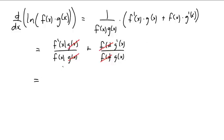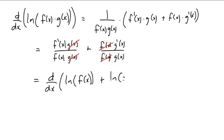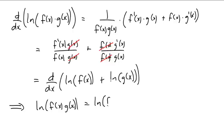This is the derivative of the natural log of f(x) — if you take the derivative of ln(f(x)), you get 1/f(x) times f'(x). And the remaining term is the derivative of the natural log of g(x). By that theorem we proved at the beginning, therefore the natural log of f(x)·g(x) is the natural log of f(x) plus the natural log of g(x) plus some constant c.